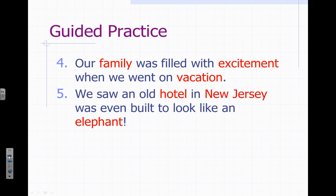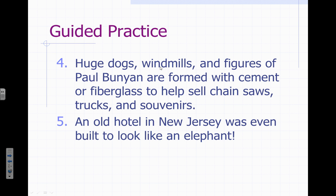Here's what you should have marked. We have family, excitement, and vacation in one sentence, and hotel, New Jersey, and elephant in another. Notice that 'we' in both sentences is not marked — that's because we is a pronoun. A pronoun acts like a noun and takes the place of the noun so we're not repeating ourselves. Going back to the previous slide, you should have marked dogs, windmills, figures, Paul Bunyan, cement, fiberglass, chainsaws, trucks, and souvenirs. At number five: hotel, New Jersey, and elephant.